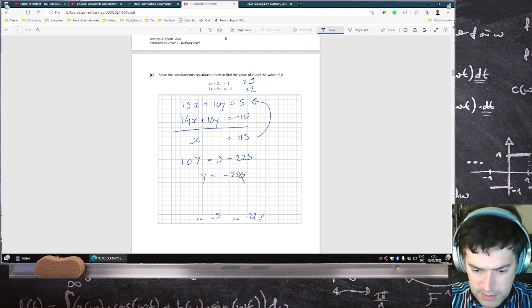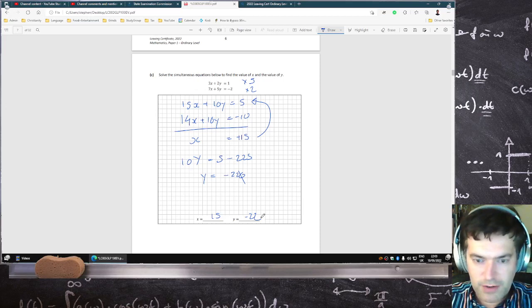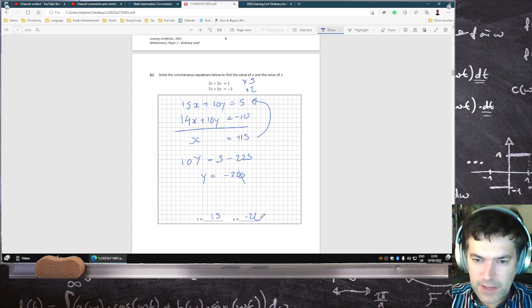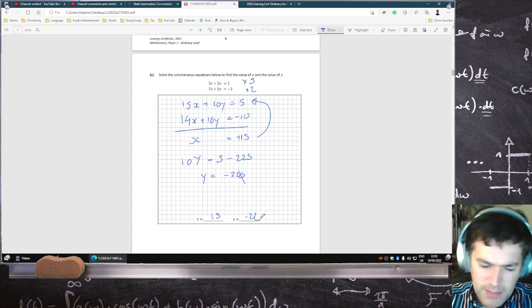I'm going to confirm that. That is wrong. 14, 10, minus 10. 15, 10, 5. 15 minus 14 is 1. 5 minus minus 10 is 15. 15, 10, 3, 2, 1. Man, what am I doing wrong?